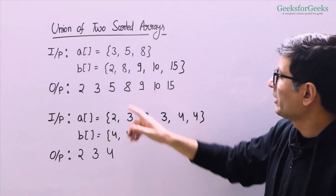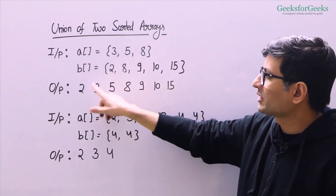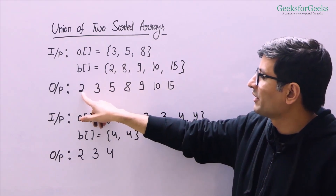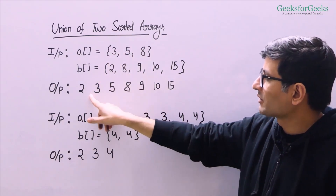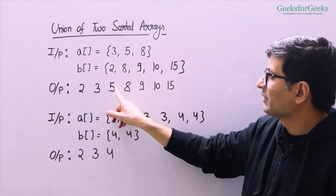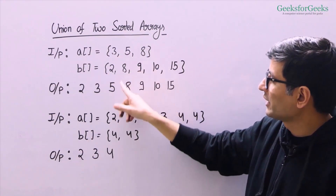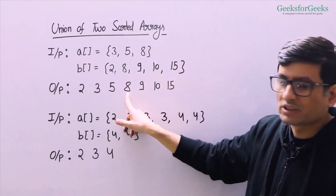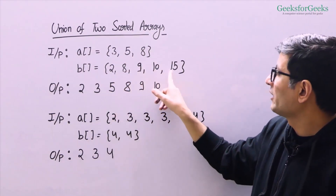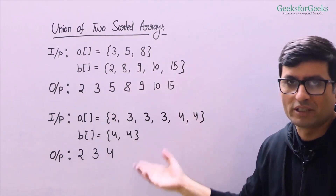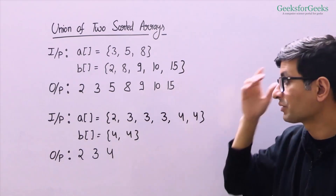For example, 2 is the smallest element so we print 2, then 3, next smallest 5, 8. 8 is there in both arrays but we print it once. Then 9, 10, 15 — we print these elements also.